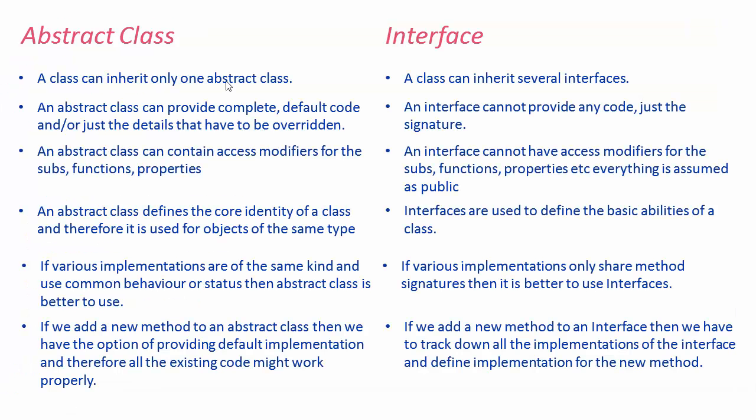Now let's look at the differences between abstract class and interface. A class can inherit only one abstract class, while it can inherit from several interfaces. An abstract class can provide a complete implementation of a method, some implementation that can be overridden, or just the declaration of the method — while an interface only specifies declarations which must be implemented in the child class. An abstract class can contain access modifiers like public and private, but for an interface everything is considered public.